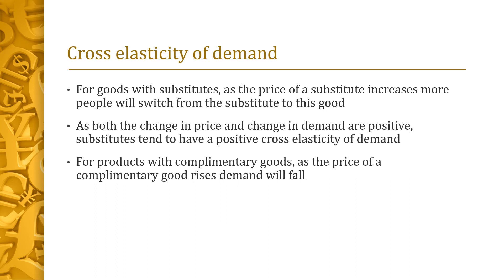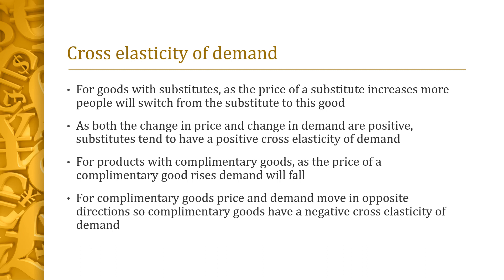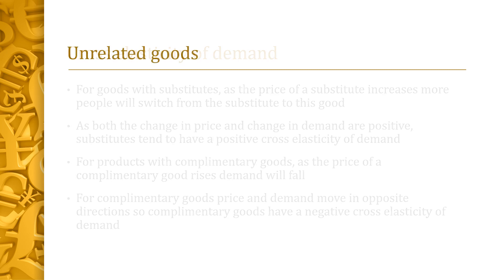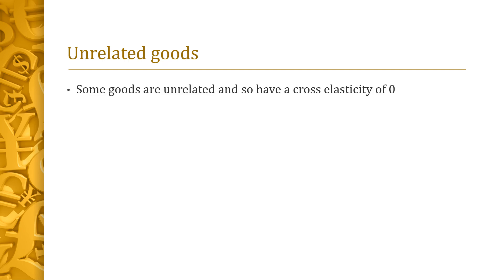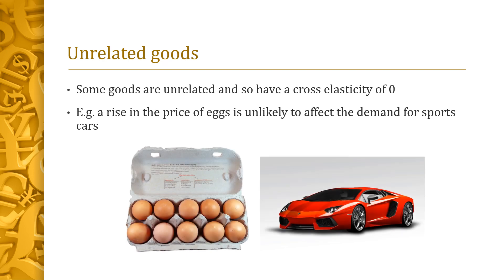For products with complementary goods, as the price of a complementary good rises, demand will fall. If we think about a games console — as the average price of console games rises, demand for the actual console itself will fall. However, if the price of games were to fall, demand for the console would rise. For complementary goods, price and demand move in opposite directions, so complementary goods have a negative cross elasticity of demand. Some goods are unrelated and so have a cross elasticity of zero — for example, a rise in the price of eggs is unlikely to affect the demand for sports cars.